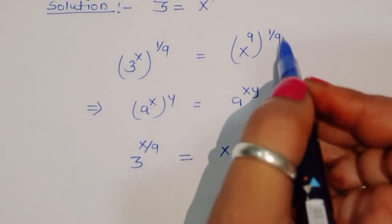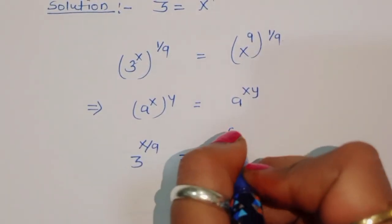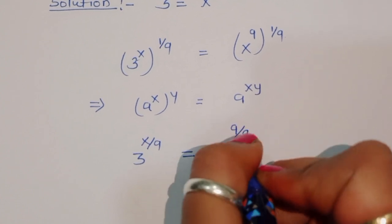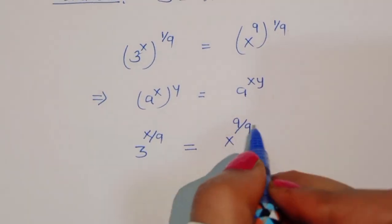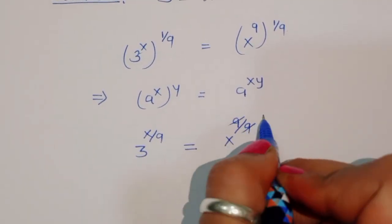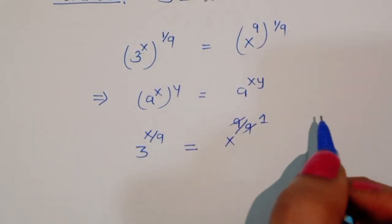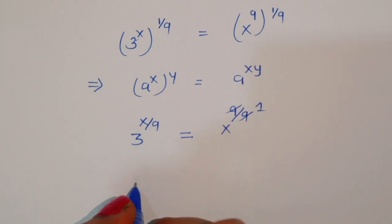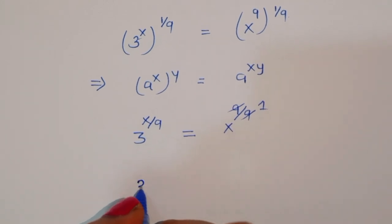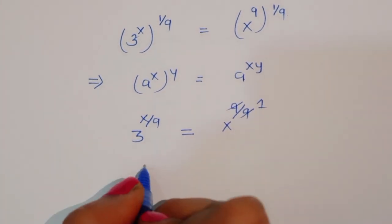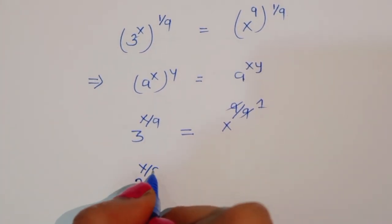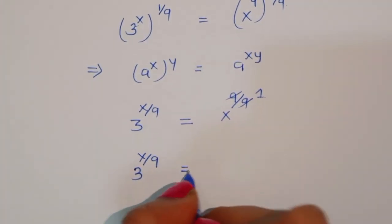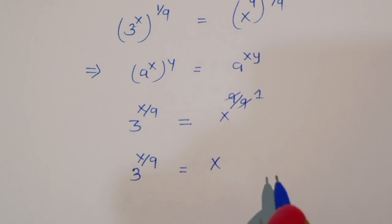So we have 3 power x by 9 is equal to x power 9 by 9, which simplifies to x power 1, meaning x. So we can write 3 power x by 9 is equal to x.